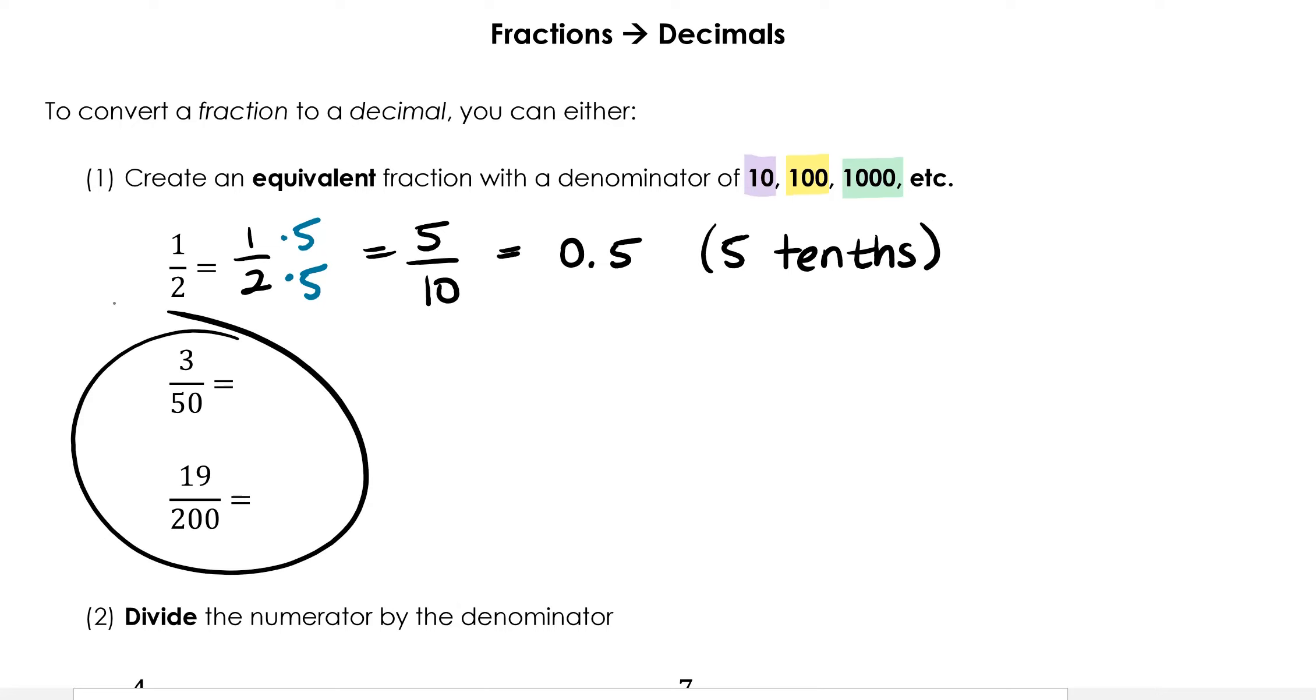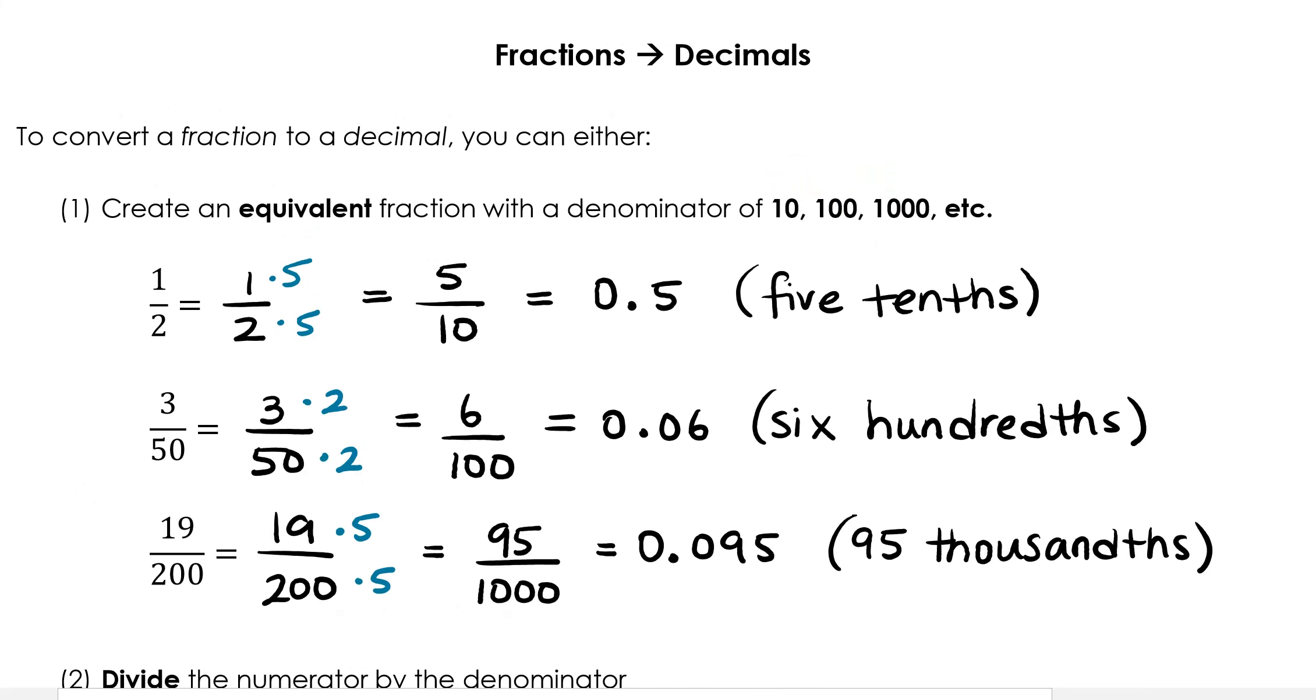Pause the video here while you try these two examples. In the second example, 50 can be converted to 100, so we end up with 0.06, or six hundredths. 200 can be converted into 1000, so we end up with 0.095, or 95 thousandths.